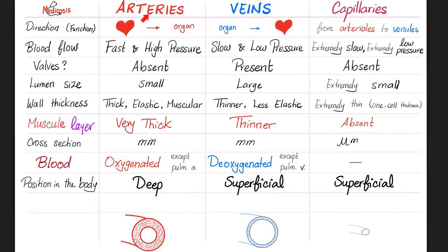Now, let's compare among arteries, veins, and capillaries. Direction. Arteries take you from the heart to an organ. A vein from an organ to the heart. Capillaries from arterioles to venules, from the arterial side to the venous side, from oxygenated to deoxygenated. The capillary is the one that supplies the cell with oxygen and nutrients, and dumps carbon dioxide and wastes. Arteries have fast blood flow with high pressure. Veins, slow blood flow with low pressure. Capillaries, extremely slow flow and extremely low pressure.